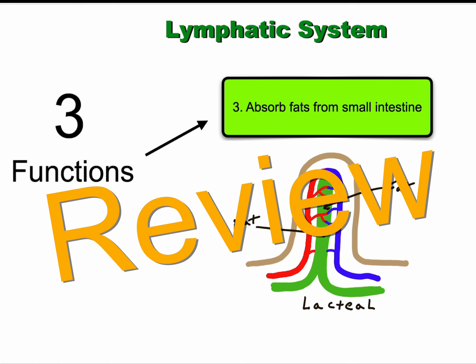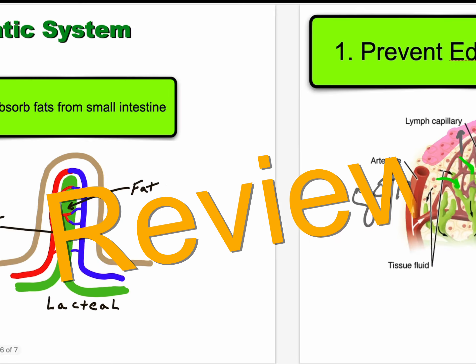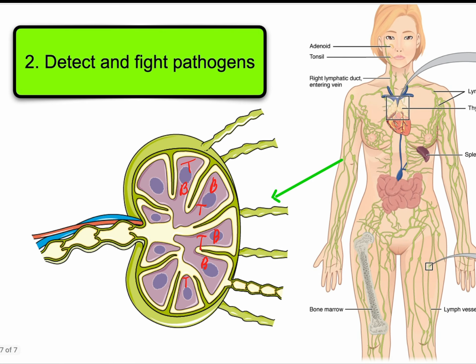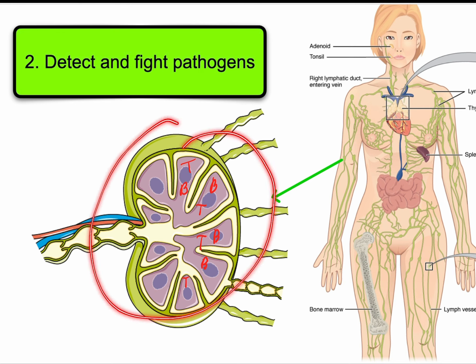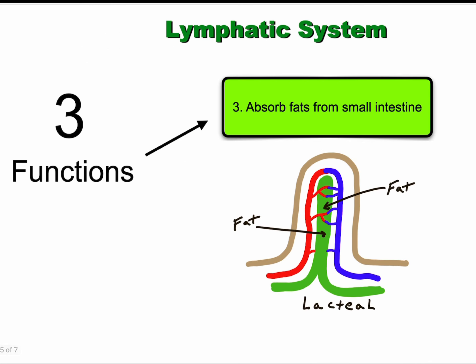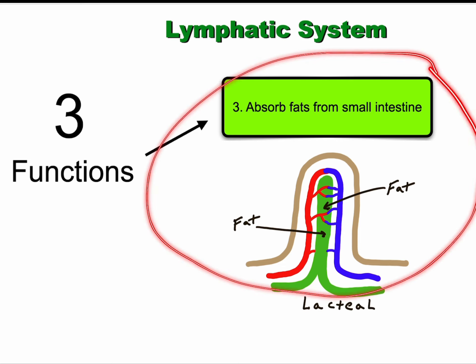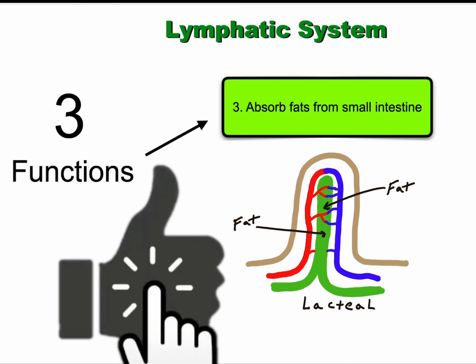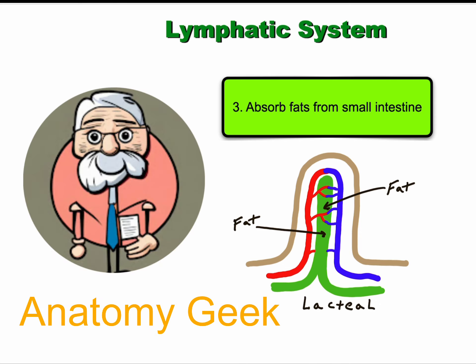To review, there are three main functions of the lymphatic system. Number one is to prevent edema. Number two is to detect and fight pathogens through lymph nodes, with lymph vessels eventually returning fluid to the blood. And the third function is to absorb fats from the small intestine. If this was useful, drop a comment, hit the like button, and feel free to subscribe. There are many videos covering aspects of human anatomy and physiology with more coming soon.